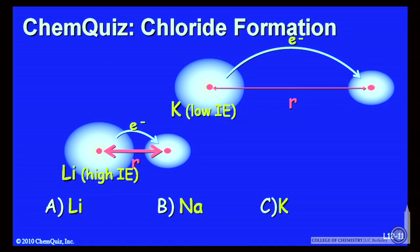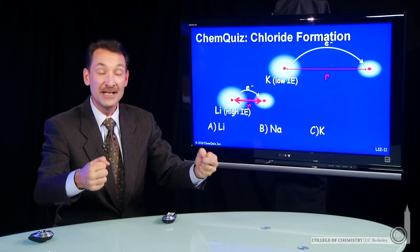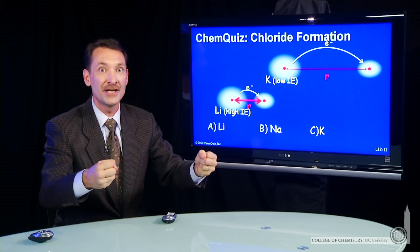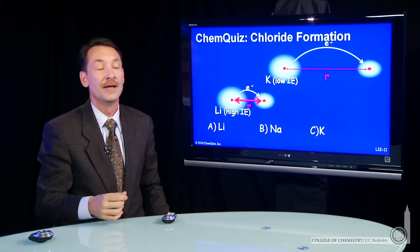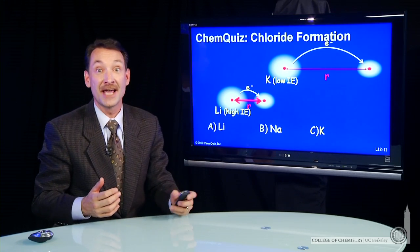So potassium, with the lowest ionization energy, is the easiest to peel an electron off of. So I peel an electron off potassium at the greatest distance, because I don't need as much coulombic stabilization between the plus and minus. I can do so at a greater distance. Potassium is the right answer in this case.